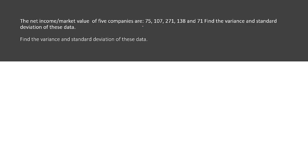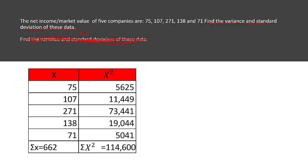So the net income, slash market value, of five companies are 75, 107, 271, 138, and 71. Find the variance and the standard deviation of this data. I wrote it twice. I really need to get better at doing PowerPoints. It's a lot of mistakes on the videos. It feels like I spend most of the time complaining of my mistakes on the videos, but never mind. Just ignore this one. And what we do is that we are going to consider the table. So in the previous video, we did plenty of tables, so we're going to consider X. Let's say this is in billions, by the way.